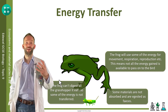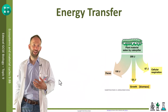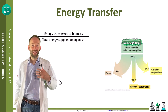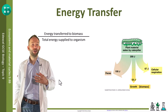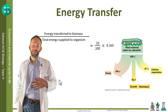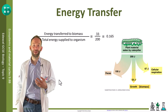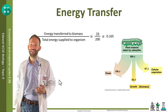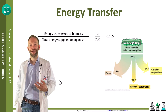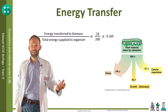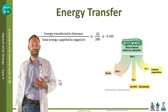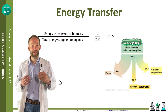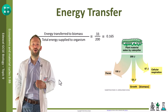We can show these energy transfers between trophic levels using a Sankey diagram. You can calculate the efficiency of energy transfer using the equation: energy transferred to biomass divided by the total energy supplied to the organism. In this case, the caterpillar ate 200 joules, but only 33 joules went into growth to increase biomass, 100 joules was lost in feces, and 67 joules was used in cellular respiration. So the efficiency is 33 divided by 200, which gives 0.165.